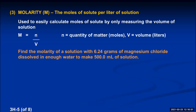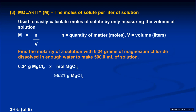Let's find the molarity of a solution with 6.24 grams of magnesium chloride dissolved in enough water to make 500.0 milliliters of solution. The magnesium chloride is the solute. We need its molar mass: one mole of MgCl₂ has one mole of magnesium (1 × 24.31 g/mol) plus two moles of chlorine (2 × 35.45 g/mol), giving 95.21 grams per mole. Using that as a conversion factor with grams on the bottom, we calculate the number of moles of magnesium chloride.